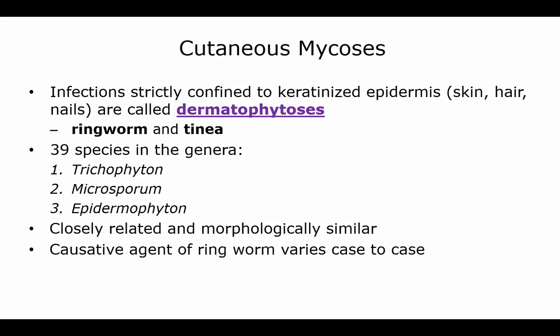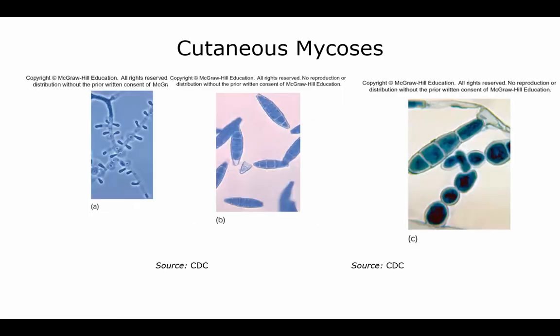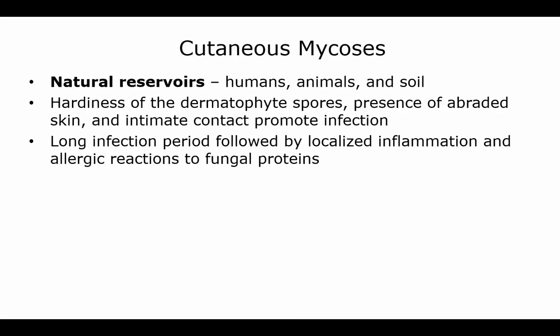Cutaneous mycosis are confined to the keratinized epidermis found in the skin, hair, and nails — we call these dermatophytosis, which includes ringworm and tinea. There are 39 species in this group and they are very closely related and morphologically similar, though the causative agent of ringworm varies from case to case. Natural reservoirs are humans, animals, and soils, and dermatophyte spores are very hardy. Abraded skin can be invaded, and intimate contact promotes infection, usually resulting in a long infection period with localized inflammation and allergic reactions to fungal proteins.